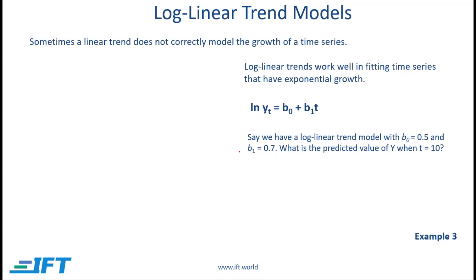Let's look at another simple example. We now have a log linear trend model. The value of b₀ and b₁ is given. What is the predicted value of y when t is equal to 10? So we can say that the natural log of y when t is equal to 10 is b₀ which is 0.5 plus b₁ which is 0.7 times t which is 10. So the natural log of y is equal to 0.5 plus 7 which is 7.5, and then y when t is equal to 10 is equal to e to the power of 7.5 which is 1808. So this illustrates how we can use log linear trend models. Now if you have time you can work through example 3.